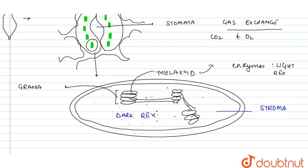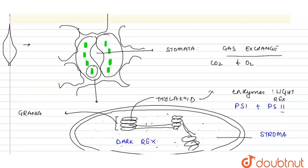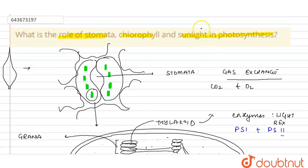The thylakoids also contain two photosystems: PS1 (Photosystem 1) and PS2 (Photosystem 2), both of which are active during photosynthesis.